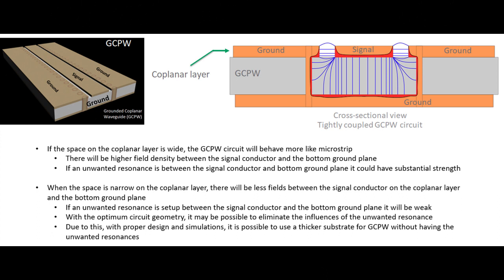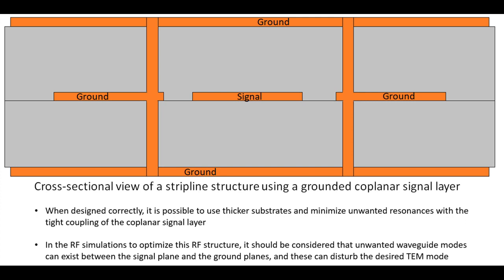Shown here is a grounded coplanar waveguide, which is typically used as you go to higher frequencies. When transitioning from microwave frequencies into millimeter wave applications, the transition is often from a microstrip structure to grounded coplanar waveguide. In the case of microstrip, the one-tenth rule is pretty strong — you really do want to follow that. For grounded coplanar waveguide, the one-tenth rule is a good guideline, but if you design it tightly coupled — where the space between ground-signal-ground on the coplanar layer is small — you can actually minimize or even eliminate the resonances that could occur between the signal plane and the ground plane due to the laminate thickness.